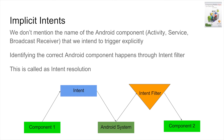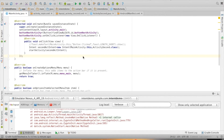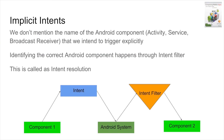As in the diagram depicted here, assume that I have component one, which could be an activity, service, or a broadcast receiver, and I want to trigger component two. In the explicit intent, component one explicitly mentions component two that it wants to trigger. But in the case of intent filter, component one will broadcast an intent, which is then handled by the Android system, which finally identifies the other component that needs to be triggered.